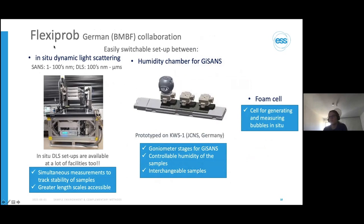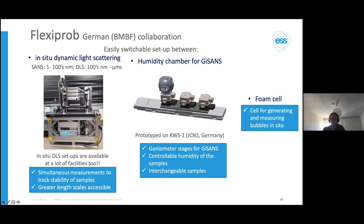One of the bigger research collaboration consortiums for making sample environments is the Flexi-Pro project — a German BMBF collaboration between multiple institutes. The idea was to have setups on a table that can be set up and calibrated offline, and then just before beam time the sample environment is wheeled into the sample position, a few things clicked into place, and the experiment can start. This overcomes the problem that custom-built sample environments are often complicated to set up — dismantling and rebuilding such a setup could take a day's work, and a day's work is a day's beam time.